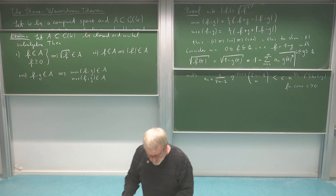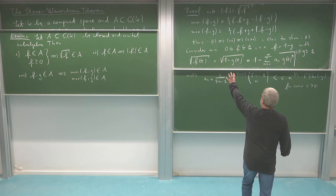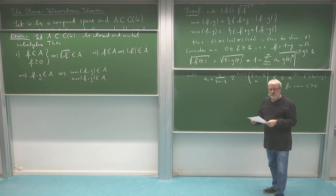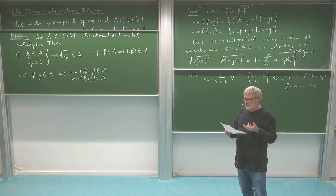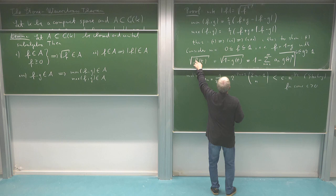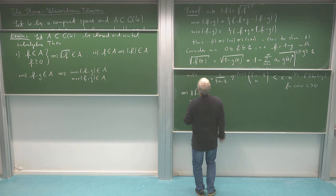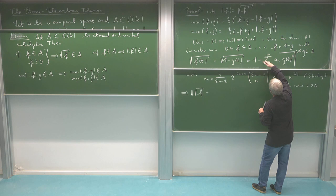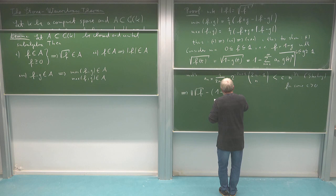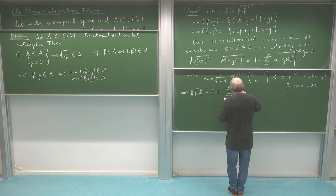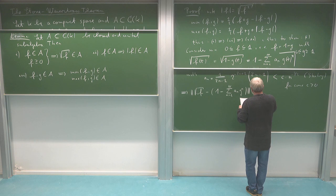What we are going to do: here we have done a pointwise Taylor expansion, but what we want is this in a uniform way, since our convergence is uniform convergence. So we should approximate the function F in a uniform way by the Taylor partial sums. What I have here is the subnorm of the square root of F minus the approximation by the Taylor series — namely, one minus the sum from n=1 to N of aₙ times Gⁿ — and I can estimate this uniformly.